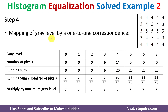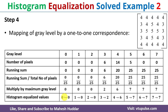In the next step we perform the mapping of gray levels one-to-one: 0→0, 1→0, 2→0, 3→2, 4→6, 5→7, 6→7, 7→7. In simple terms, in the given input image, wherever we have a 3 we replace it with 2, wherever we have a 4 we replace it with 6, and wherever we have a 5 we replace it with 7.